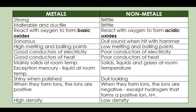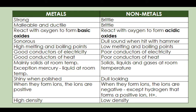With regards to the state of matter, metals are mainly solids at room temperature — except mercury, which is liquid at room temperature — while non-metals exist as solids, liquids, and gases at room temperature. Metals are shiny when polished, while non-metals are dull looking. When metals form ions, the ions are positive, while non-metals form ions that are negative, except hydrogen which forms a positive ion. In terms of density, metals usually have high density while non-metals have low density.